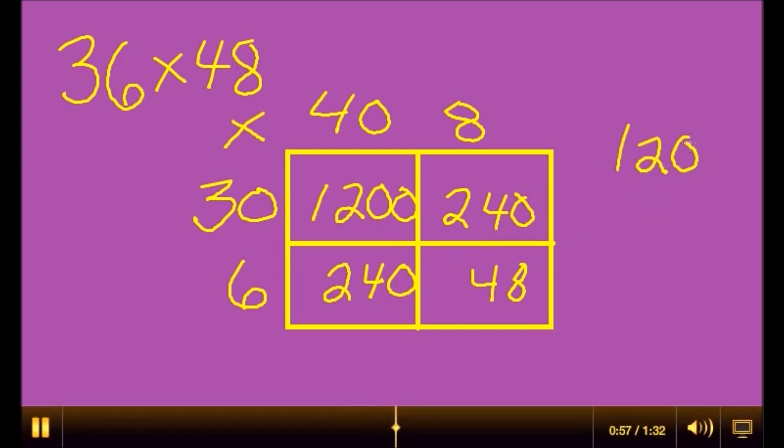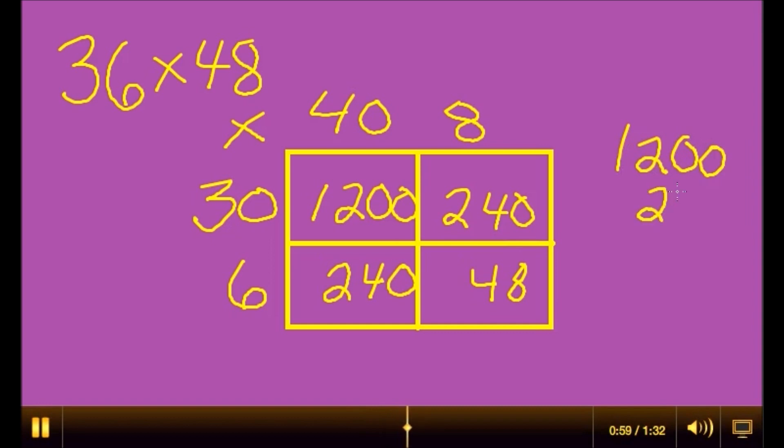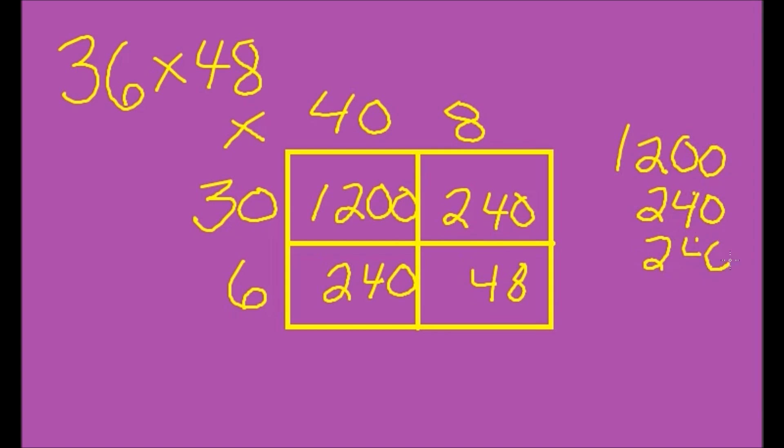When you go to add them all up: 1200 plus 240, plus 240, plus 48. You would get 8, 12, 7, and 1. You should have got an answer of 1,728. Hope you did it right!